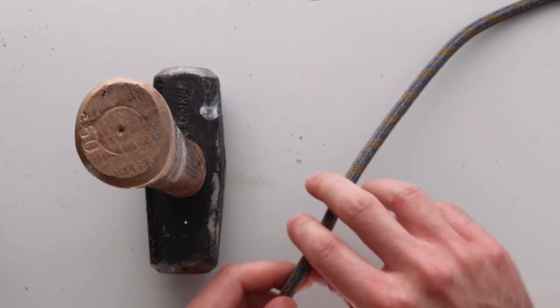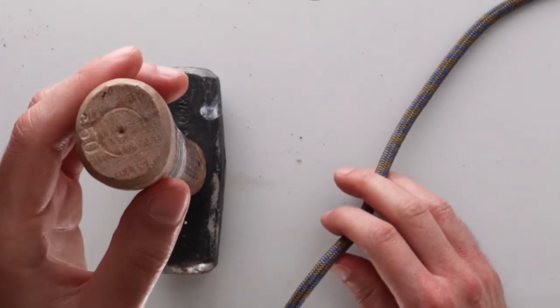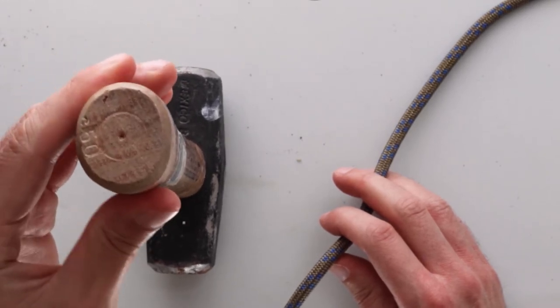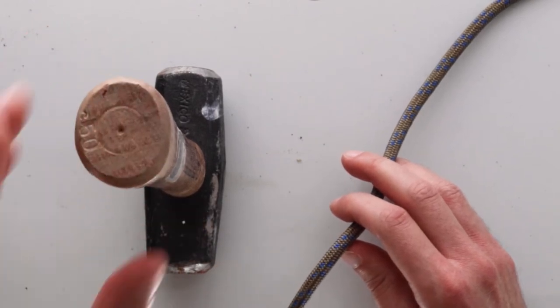When you do this you're basically going to make two loops and they're going to be on top of themselves. As you form these loops, it's important to note that you can tie the clove hitch around a much larger object than this. You just have to make the loops in proportion to the diameter of whatever you're tying it around.